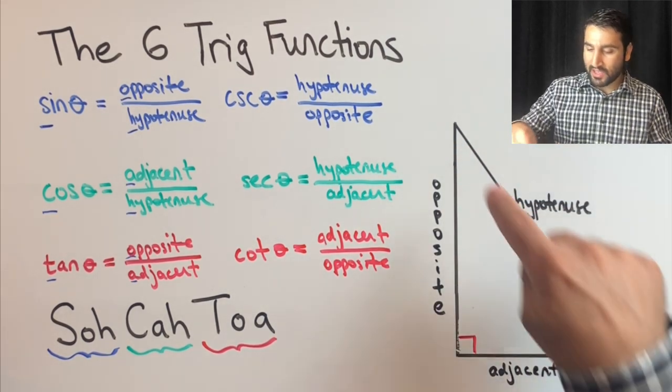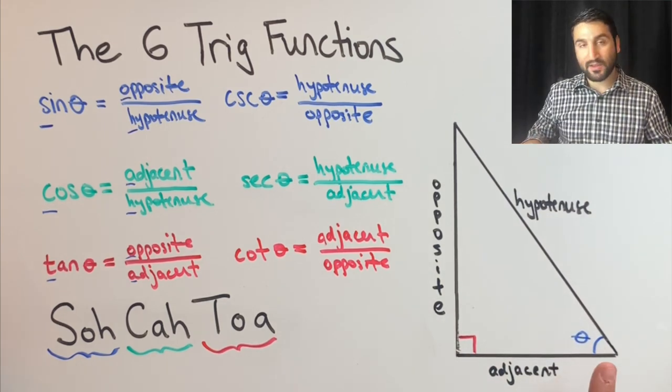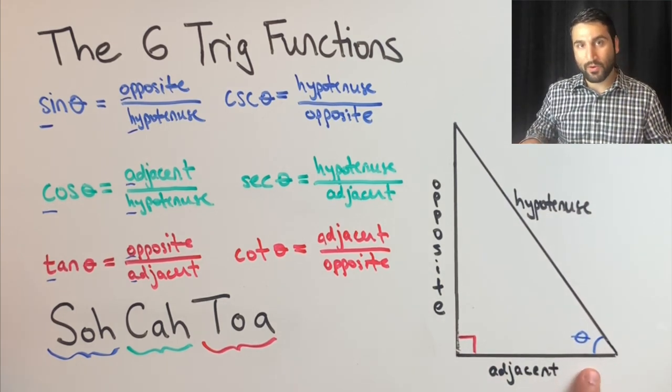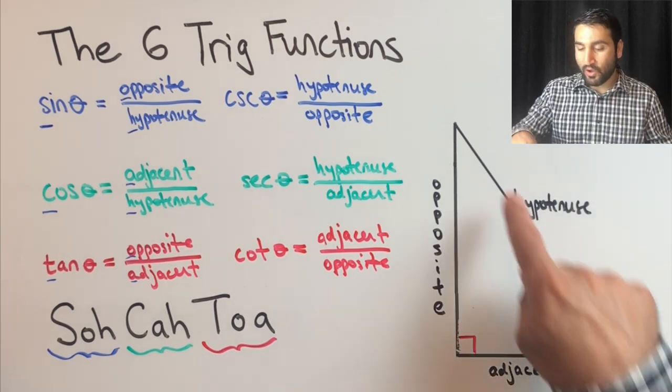And you can just place an angle theta anywhere, any which one of these two corners here. So if we leave the theta in this bottom right corner here, let's try and figure out which sides are hypotenuse, opposite, and adjacent.